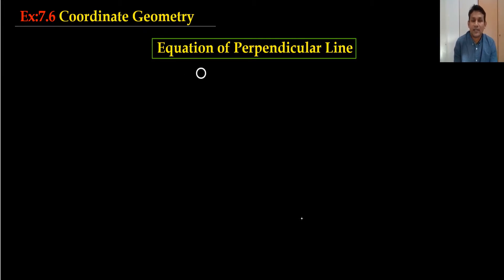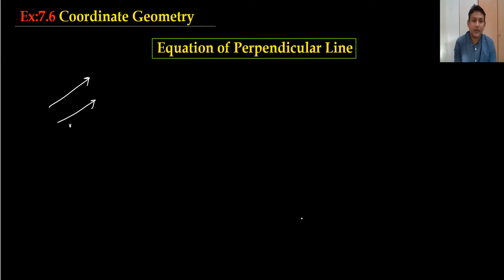Last time in 7.5, we already covered how to find the equation of parallel lines. When two lines are parallel, the gradient of the parallel lines are always the same: m1 equals m2. That was the topic in 7.5.